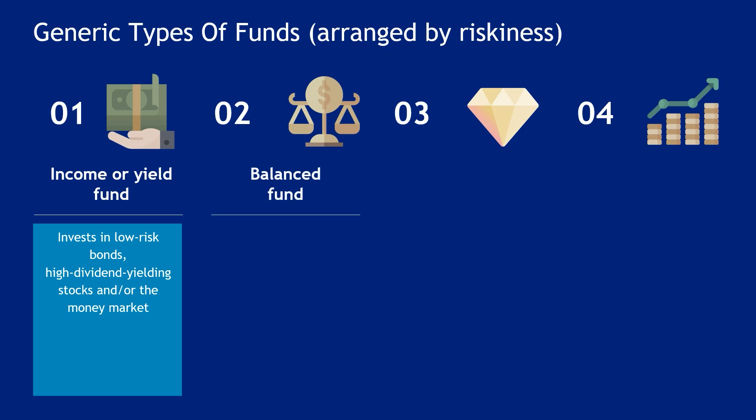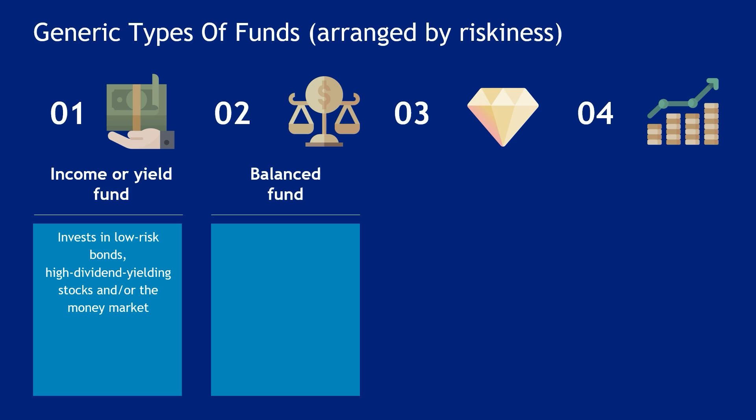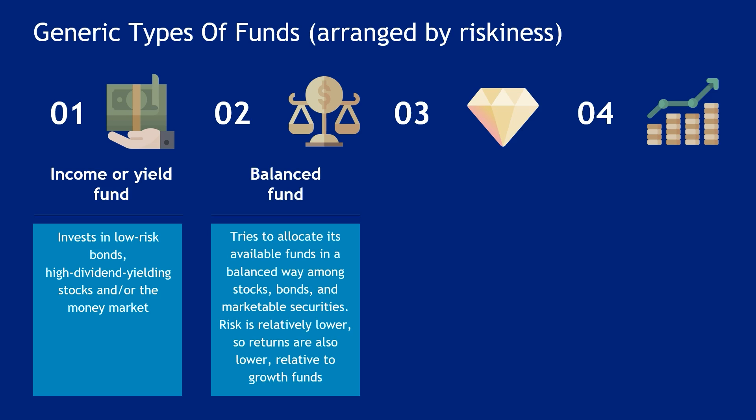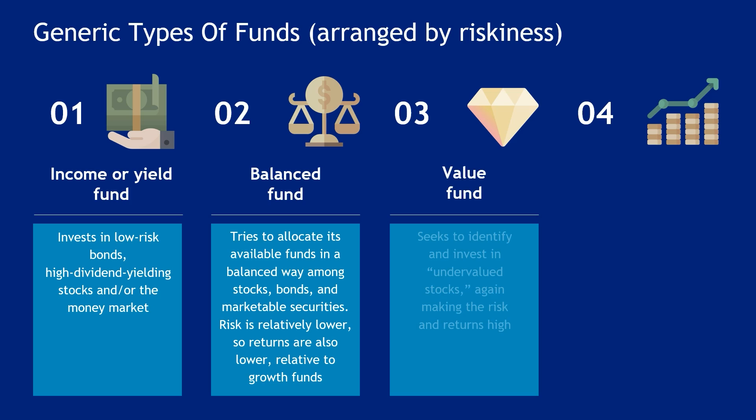Second, Balanced Fund: tries to allocate its available funds in a balanced way among stocks, bonds, and marketable securities. Risk is relatively lower, so returns are also lower relative to growth funds. Third, Value Fund: seeks to identify and invest in undervalued stocks, again making the risk and returns high.